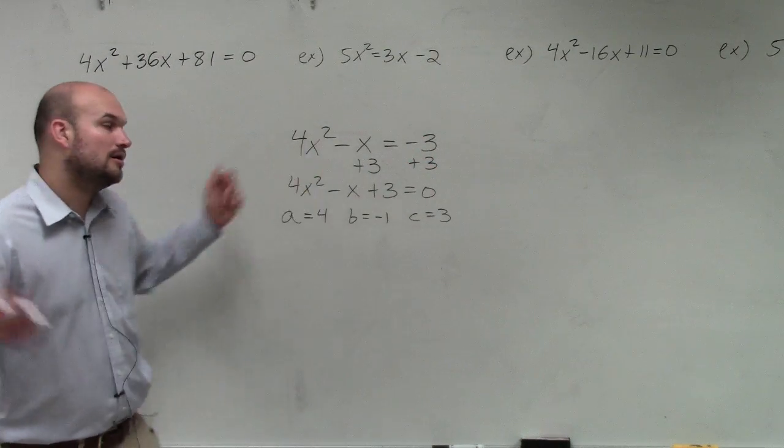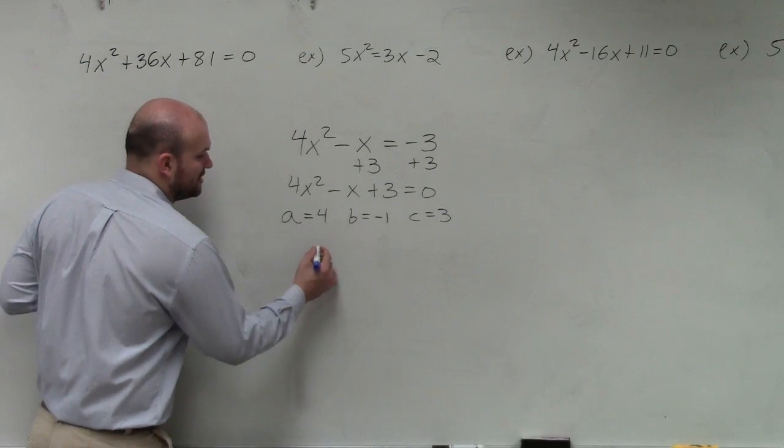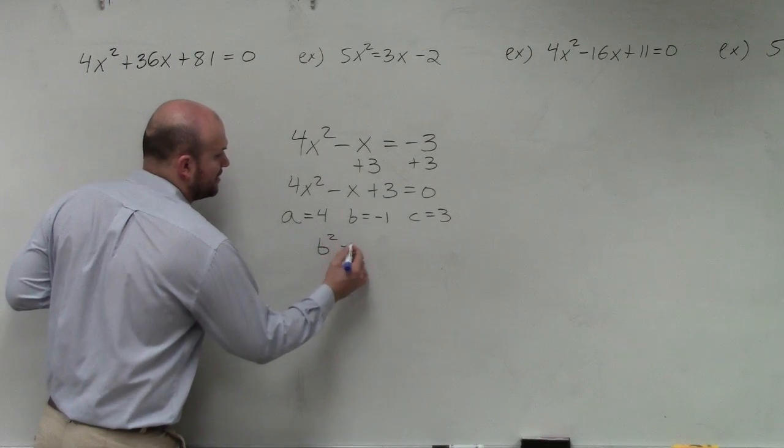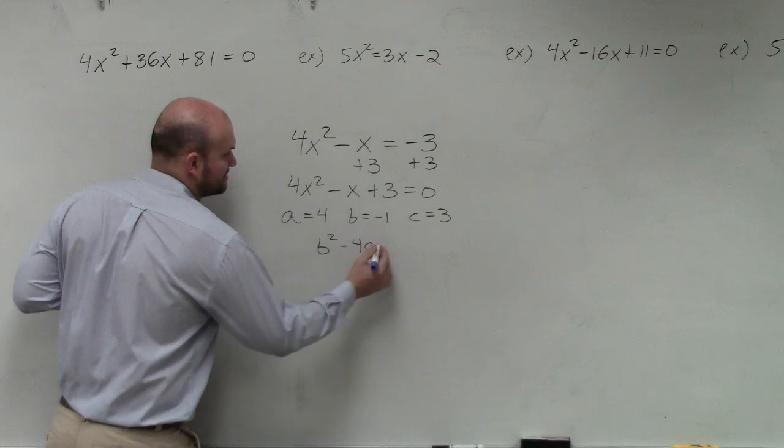That's our A, B, and C. All you have to do now is plug in the discriminant, which is B² - 4AC.